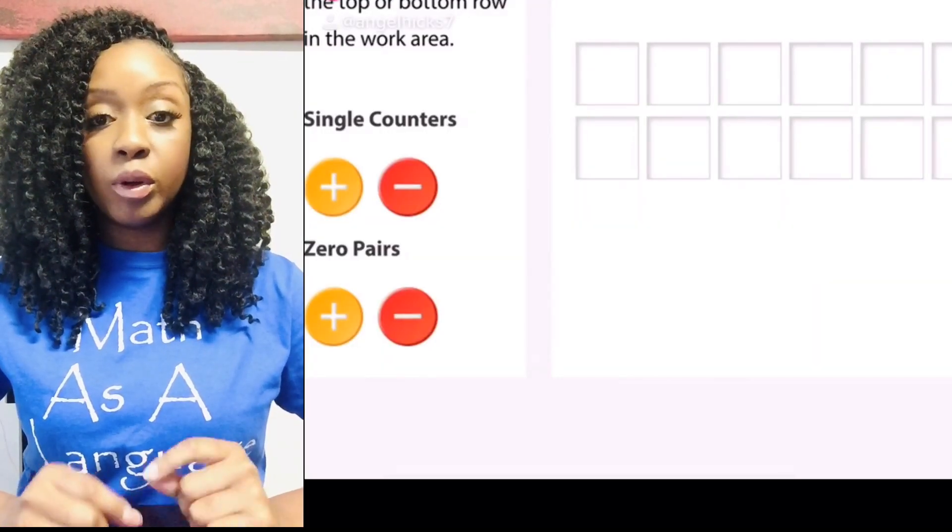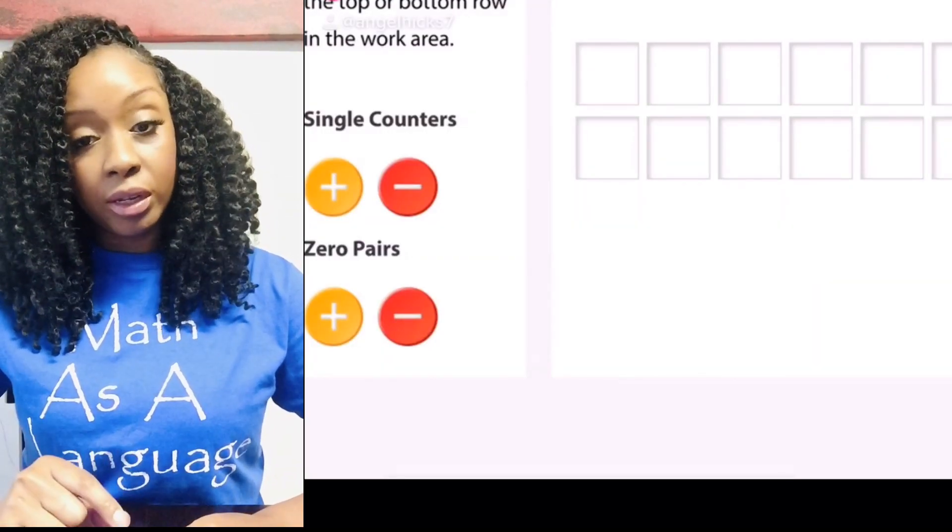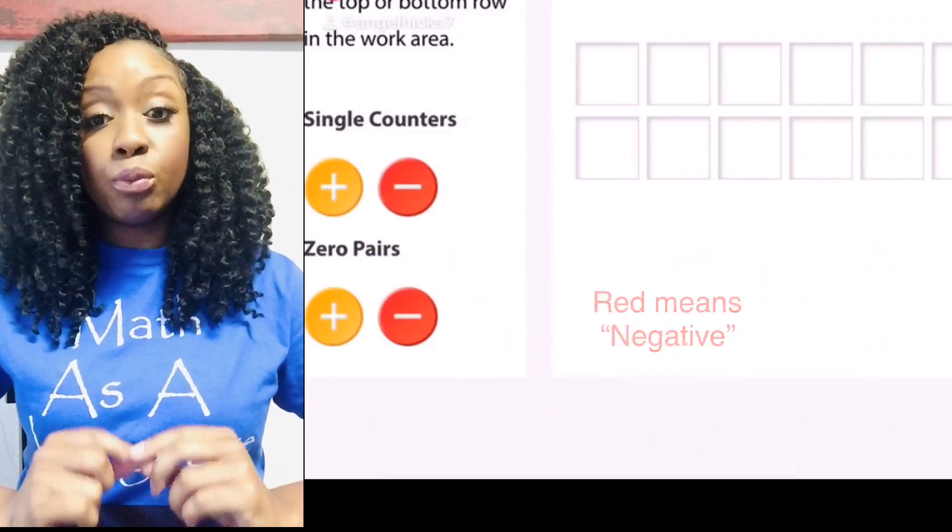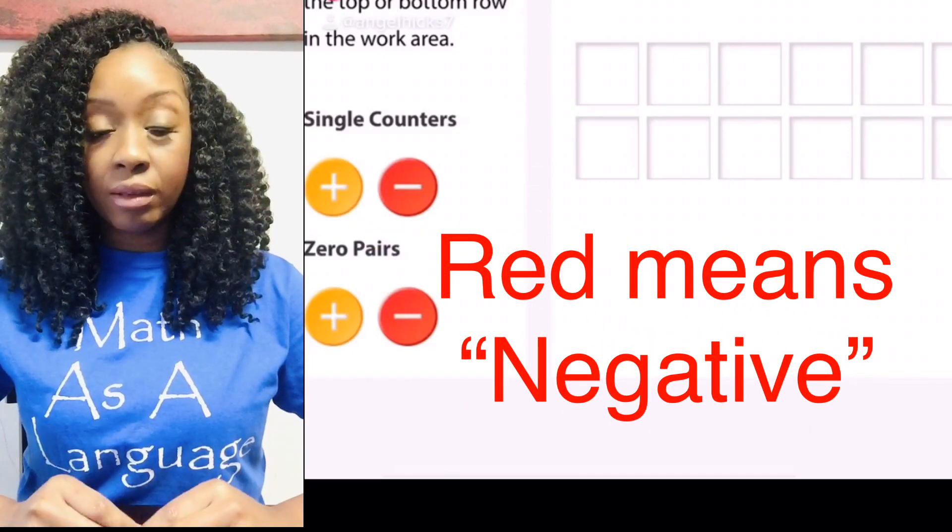First we must learn the vocabulary. If you see yellow that means positive. If you see red that means negative.